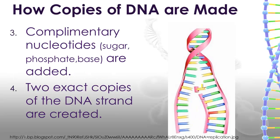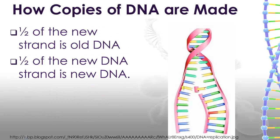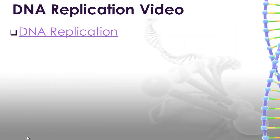The next step is a special enzyme comes along and adds nucleotides onto the string of DNA, using each side of the DNA as the pattern for which nucleotides go where. This creates two exact copies of the DNA strand. You end up with one side of the new DNA strand being old DNA and the other side being new DNA, but they are both exact copies of each other. Let's watch this video that shows DNA replication in action.